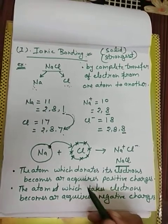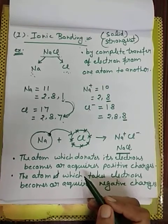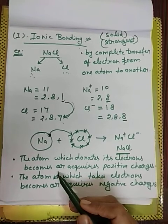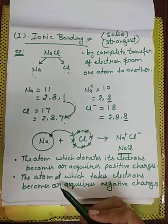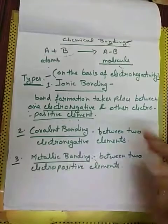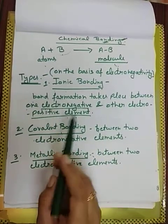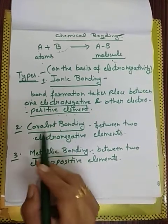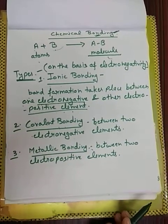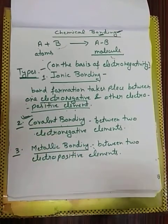Chemical bonding का यह topic revision की form में consider कर रहे हैं क्योंकि आगे के सारे topics इस module के bonding से correlated हैं। Second part में हम covalent bonding start करेंगे। I hope ionic bonding आपको understand हो गई है। If you have any doubt you can ask, otherwise in the second part of this lecture I will continue with covalent bonding. Thank you so much.